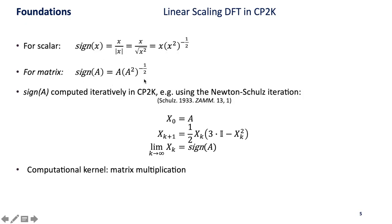If we reformulate this, we can actually directly apply this to matrices as well. What this does is map the eigenvalues of the matrix towards plus one or minus one while leaving the eigenvectors of the matrix unchanged. The sign function can be computed iteratively in CP2K using the so-called Newton-Schulz iteration.